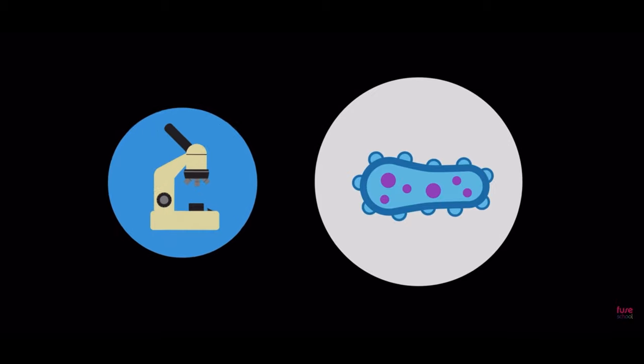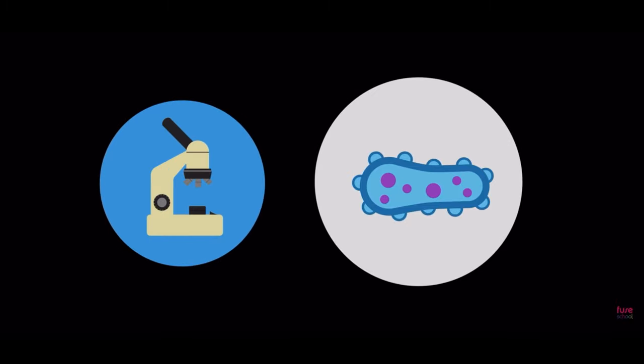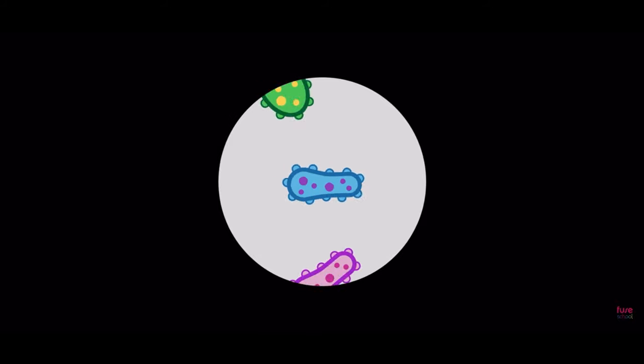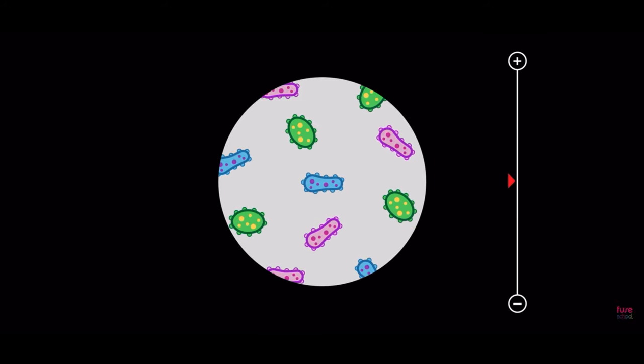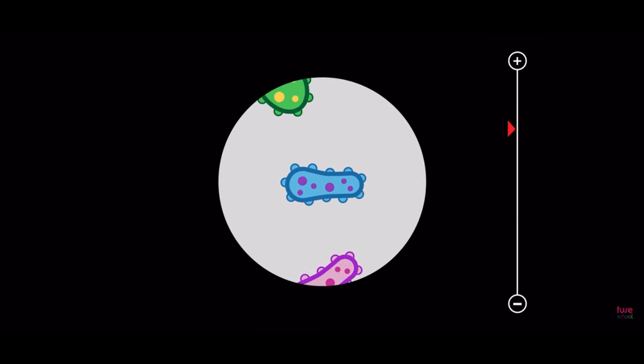To see microorganisms, the microscope was invented to be able to see their features which is normally too small to see with the naked eye. By magnifying the image, you can make it appear larger in order to see more details by scaling in or out. In order to see specific structures, you can zoom in or zoom out.